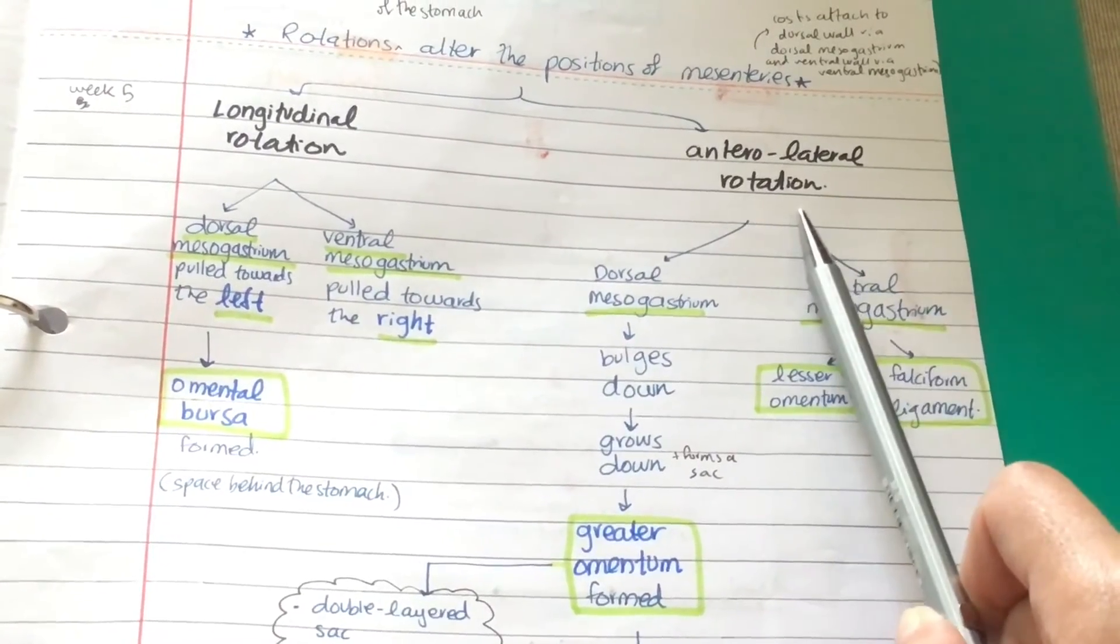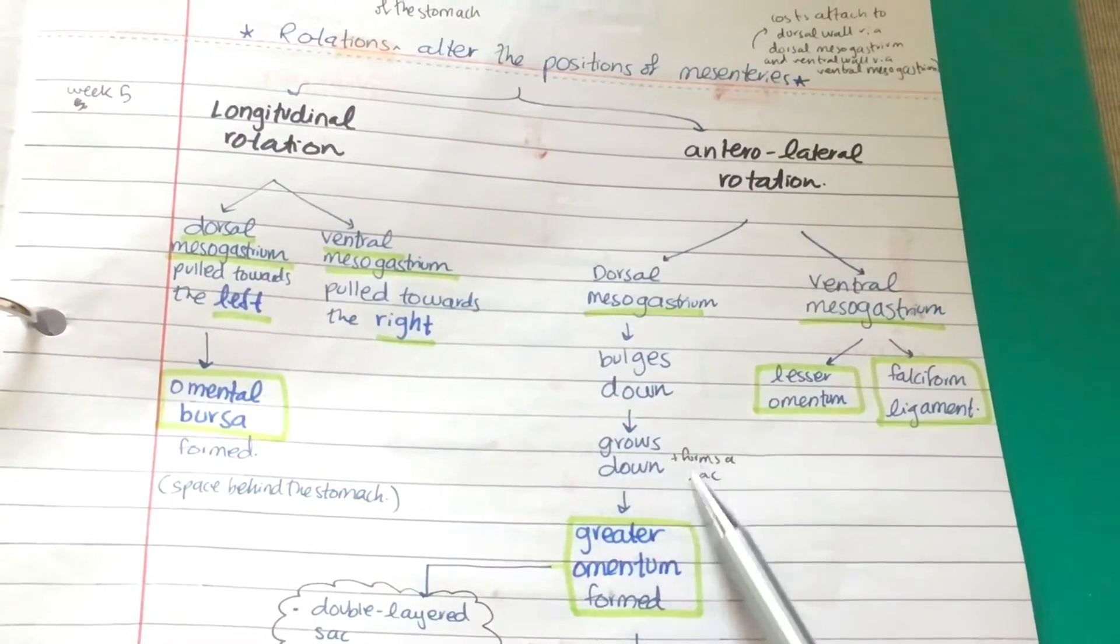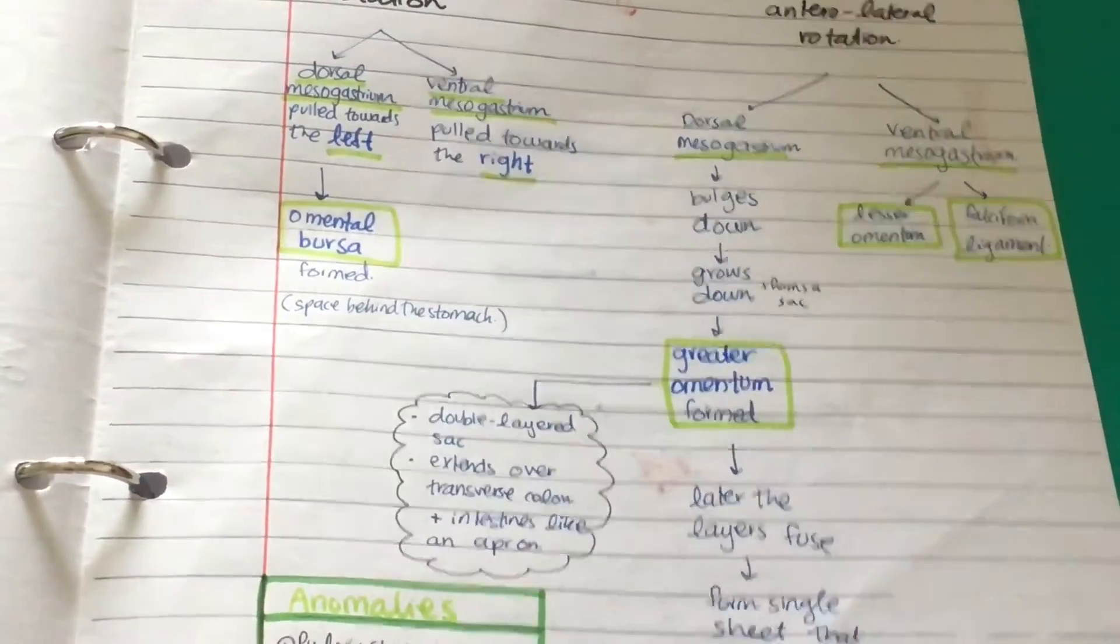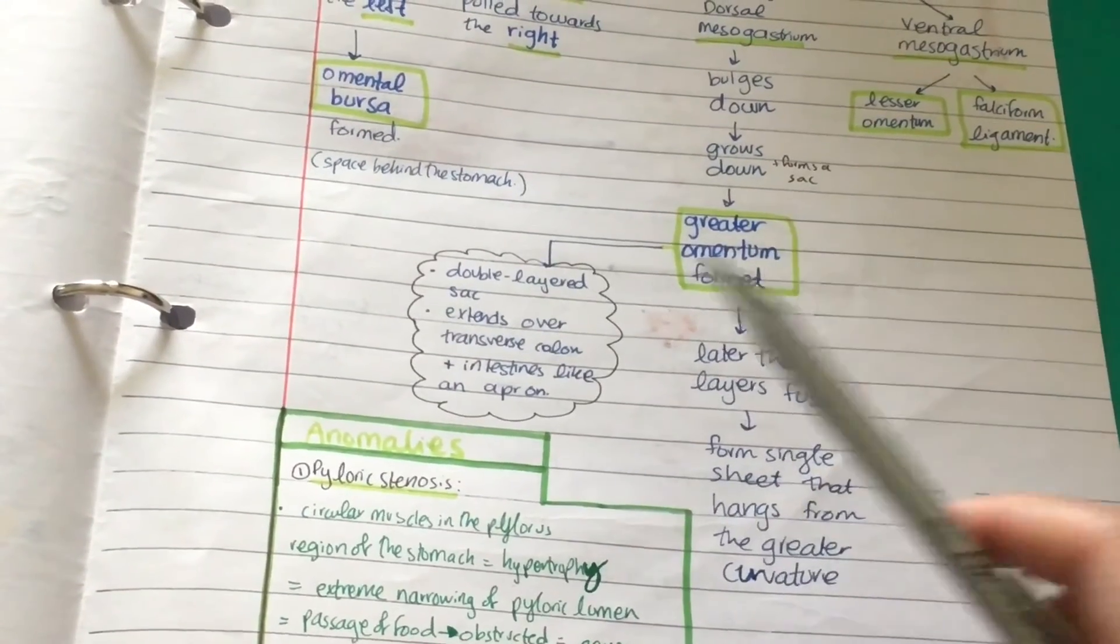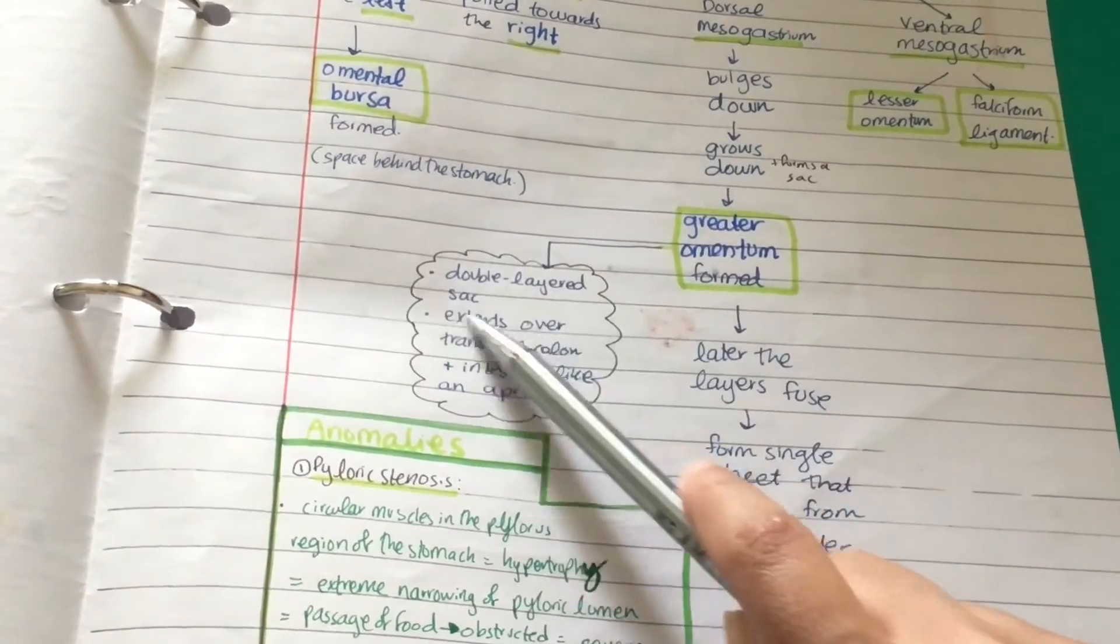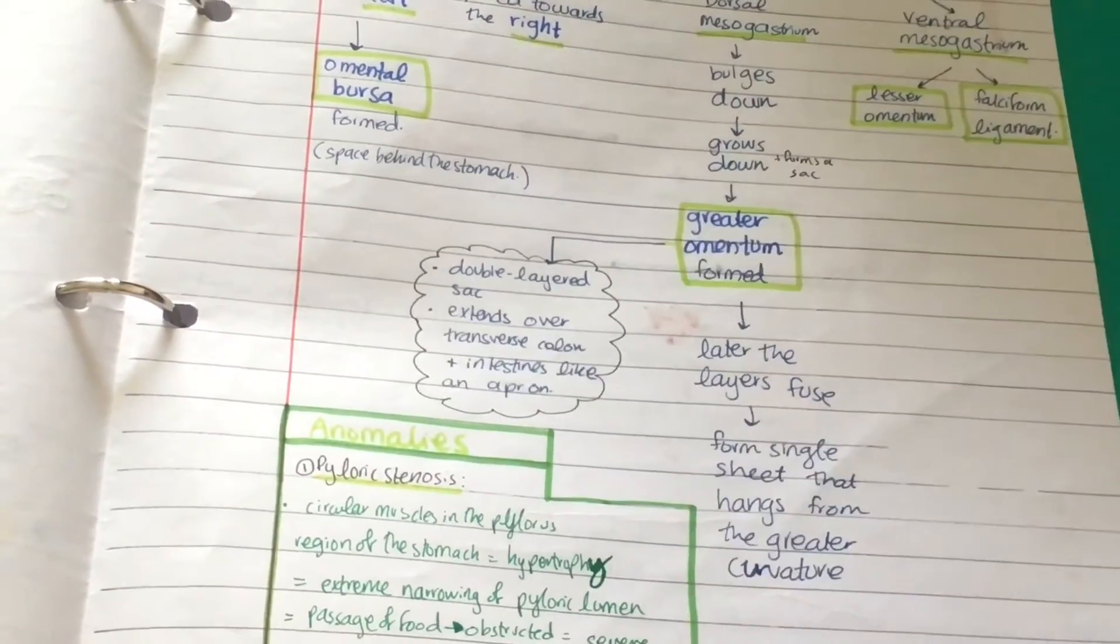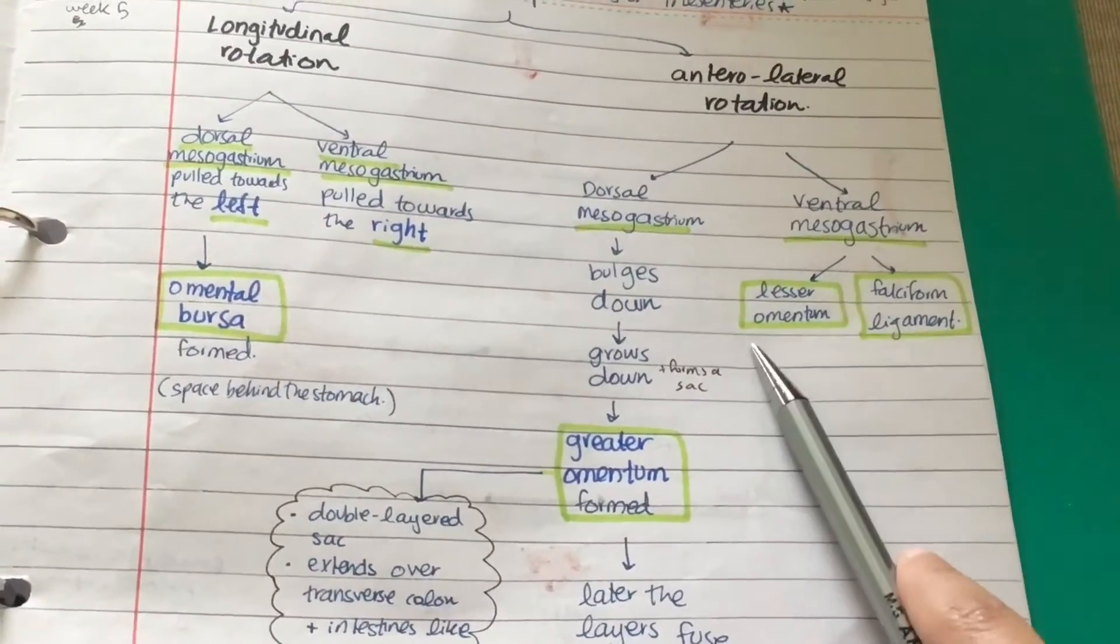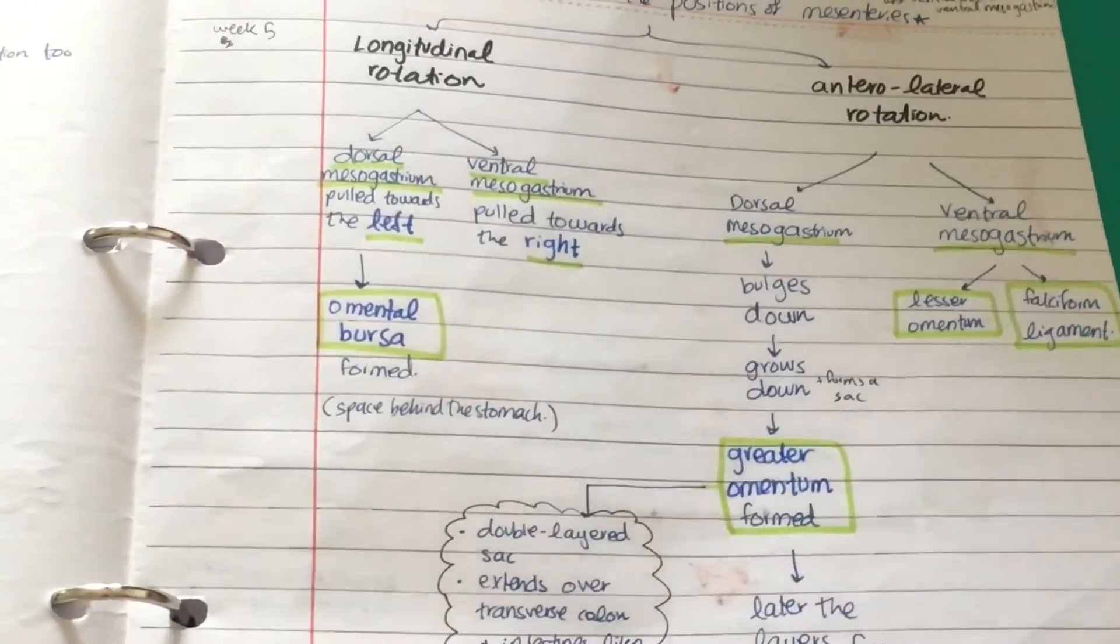Now the anterior-lateral rotation: the dorsal mesogastrium bulges down and grows downwards and forms a sac which is the greater omentum. Later the layers fuse and form a single sheet that hangs from the greater curvature. What is the greater omentum? It is a double-layered sac that extends over the transverse colon and the intestines like an apron. The ventral mesogastrium forms the lesser omentum and the falciform ligament of the liver.